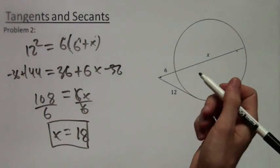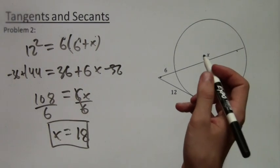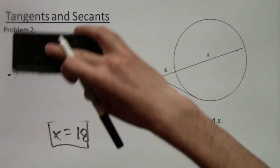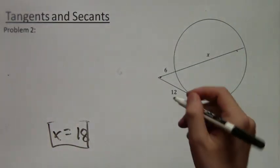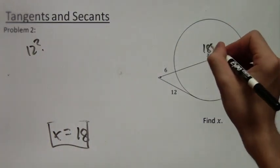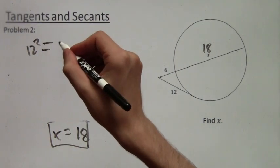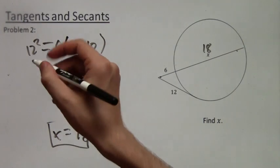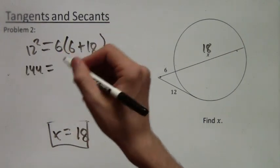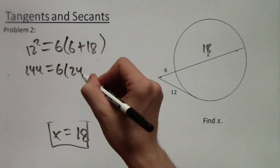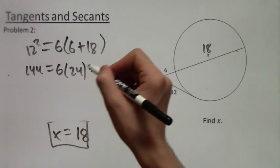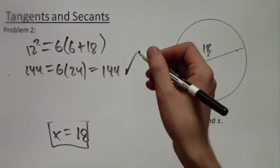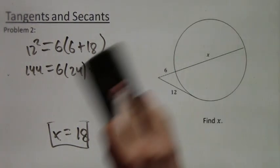And we'll want to re-plug this in to make sure that it works. So if we assume that x equals 18, then we have 12 squared equals 6 times 6 plus 18. 12 squared is 144. And then we get 6 times 24. But 6 times 24, you can use a calculator or write it out by hand. 6 times 24 is equal to 144. And that's correct. Therefore, x equals 18. We're done.